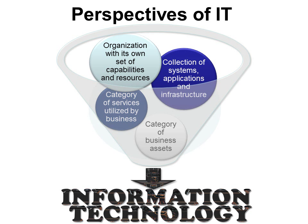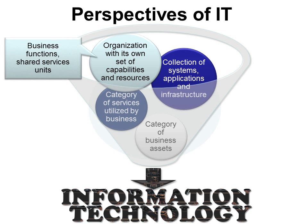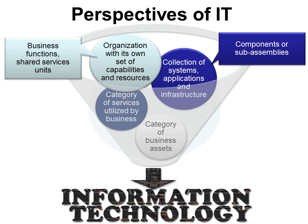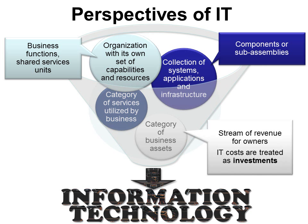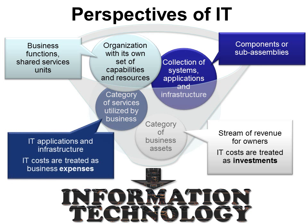It could be multiple perspectives of IT: an organization with its own set of capabilities and resources, like business functions with shared service units; a collection of systems, applications, and infrastructure, like components or sub-assemblies; a category of business assets, which would be a stream of revenue for owners, where IT costs are treated as investments; and a category of services utilized by business, where IT applications and infrastructure costs are treated as business expenses. Just know there are lots of different ways of looking at IT.